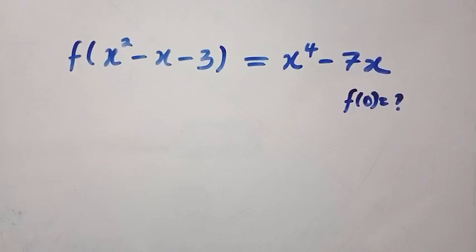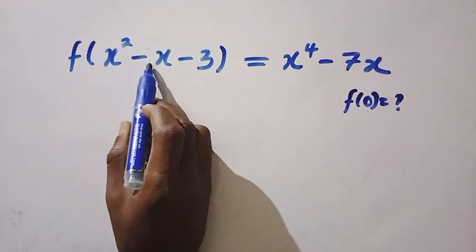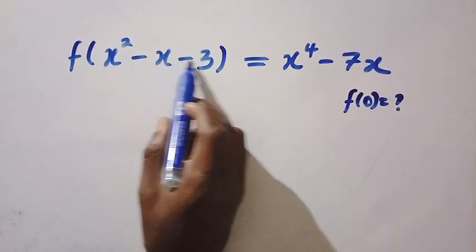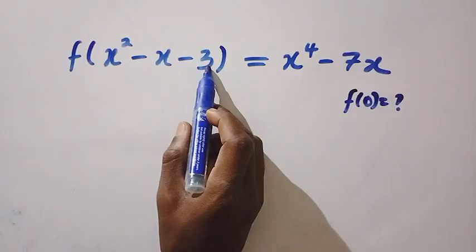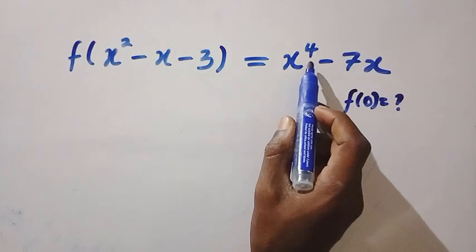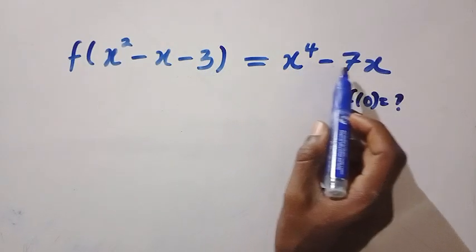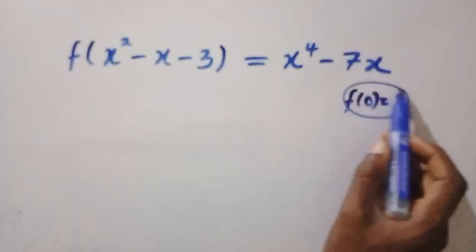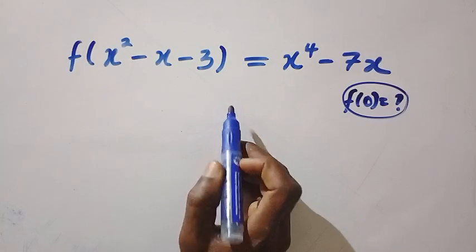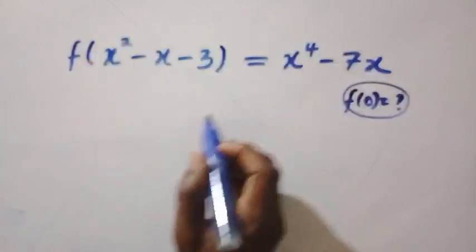Good day viewers, you are welcome. How to solve this nice functional equation? We have f of x squared minus x minus 3, which is the domain of this function, equals x to the power of 4 minus 7x. And we are interested to get f of x given this function.